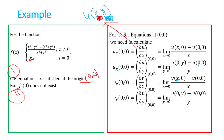Similarly, uy at (0,0), that is ∂u/∂y at (0,0), is equal to the limit as y tends to 0 of u(0, y) minus u(0, 0), divided by y — since y is the variable and x is constant. vx at (0,0) is the limit as x tends to 0 of v(x, 0) minus v(0, 0), divided by x. And vy at (0,0) is the limit as y tends to 0 of v(0, y) minus v(0, 0), divided by y.